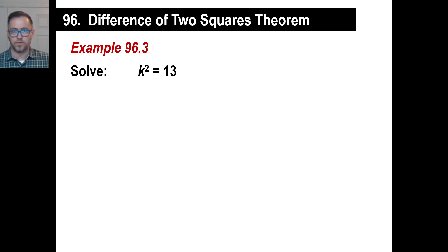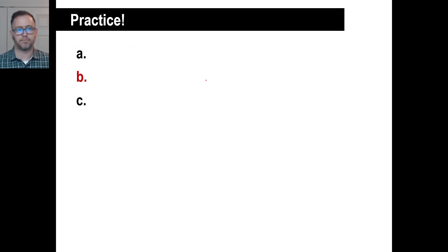K squared equals 13. Piece of cake. In fact, when you come to these in your Algebra 1 problem sets, these will take you like two seconds. The answer is, taking the square root of both sides, k is equal to, go ahead and put plus or minus the square root of 13, done. That's it. Try your practice problem A and see what you get.